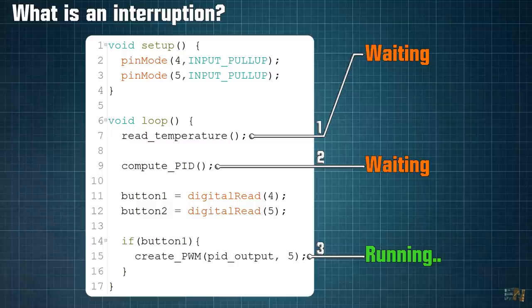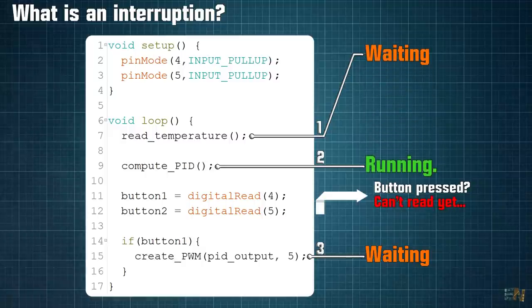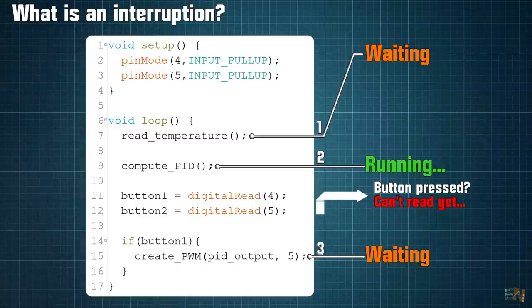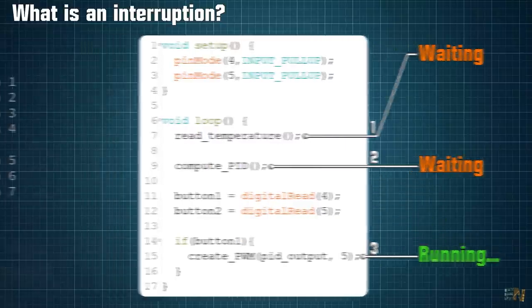If we press the push button while function 1 is still running, using these lines of code, we won't detect that the button was pressed because the digital read won't run till function 1 and 2 are done. So how could we change a variable that is used in function 3 for example while we are still running function 1? For that we use interruptions.